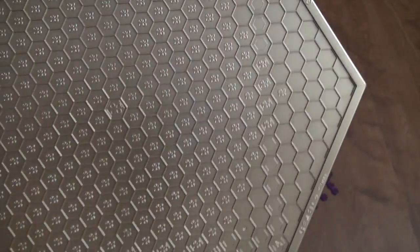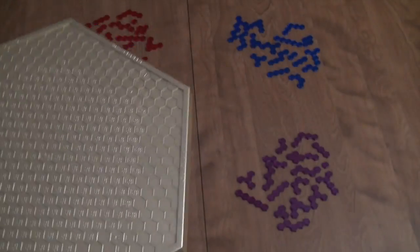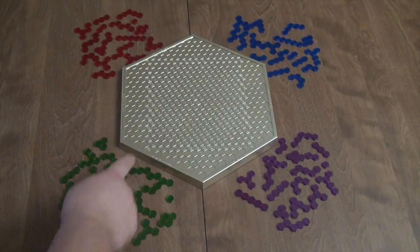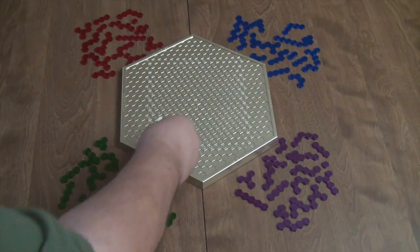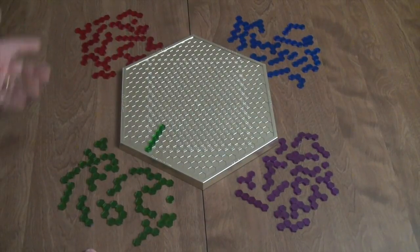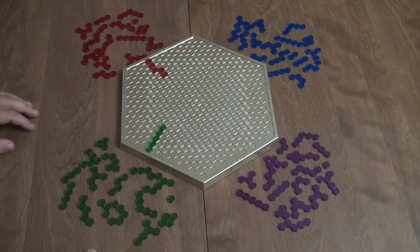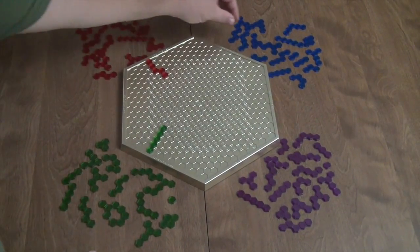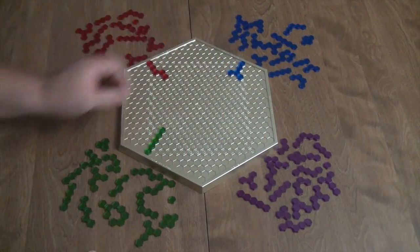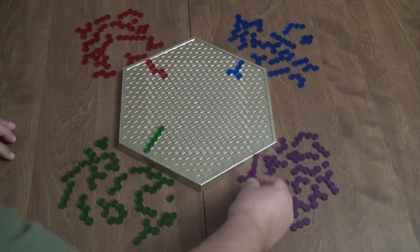One player will start from this point, another player will start from this point, third player will start here, and fourth player will start here. The play area is the square in between those four points. Anywhere in this square where you see those little icons or these hexes, you are able to play within that area.